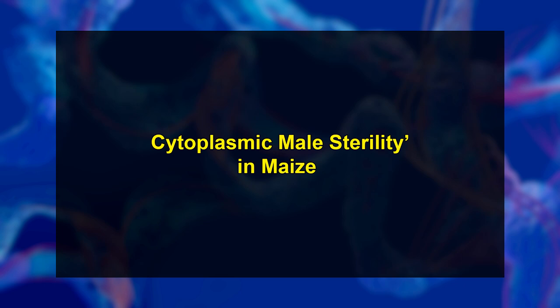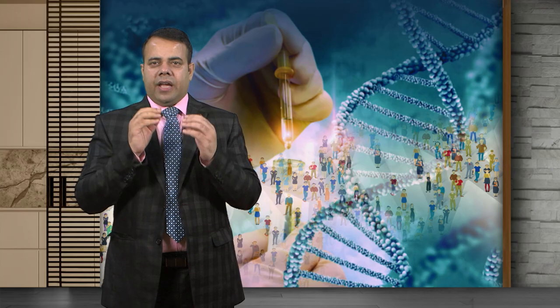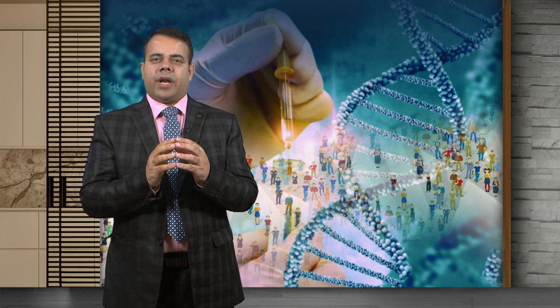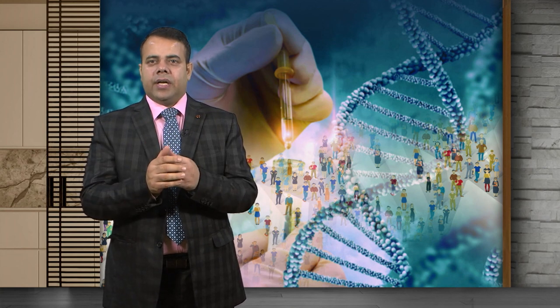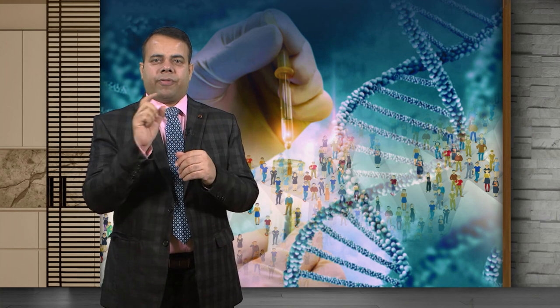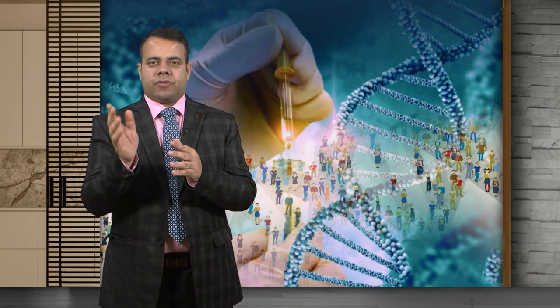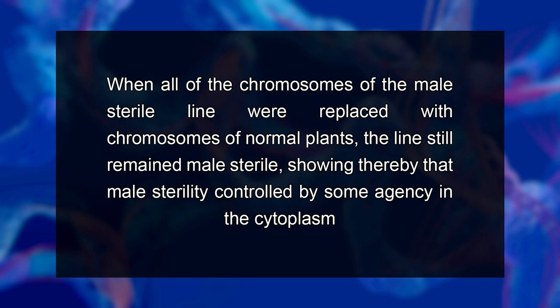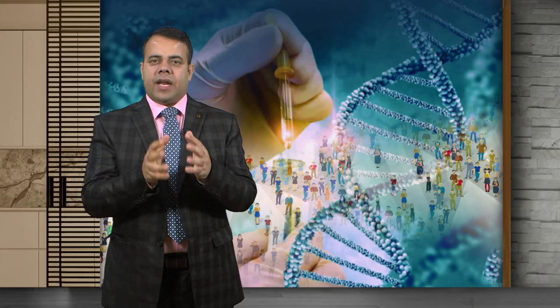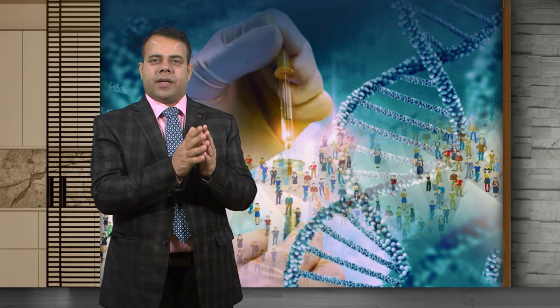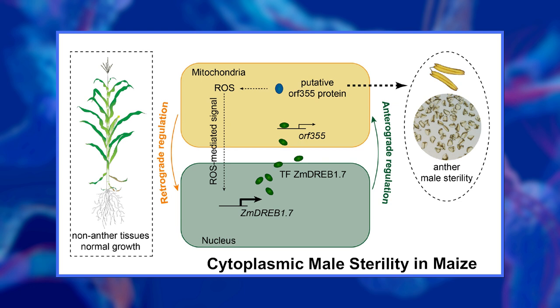Let's now discuss cytoplasmic male sterility in maize. In male sterile maize, pollen grains are aborted. This male sterility is transmitted only through the female and never by the pollen — that is from the male site. When all of the chromosomes of the male sterile line were replaced with chromosomes of normal plants, the line still remained male sterile, showing thereby that male sterility is controlled by some agency in the cytoplasm. It was later recognized that cytoplasmic male sterility in maize results from alterations in the hereditary units in the mitochondria — that is mitochondrial DNA.